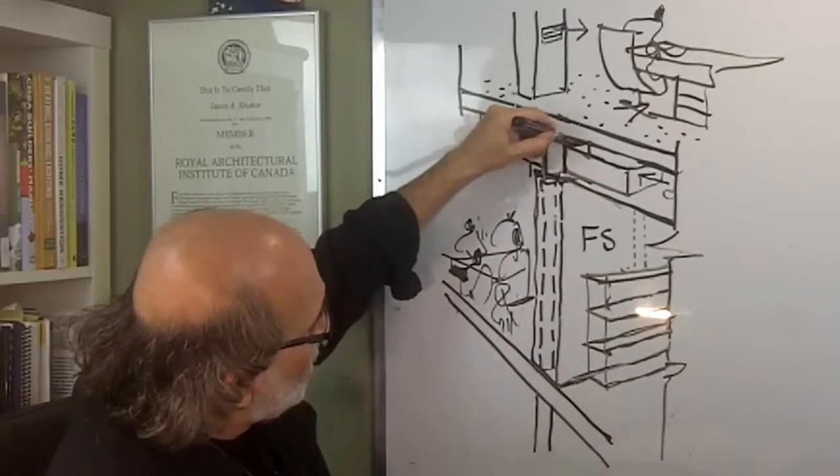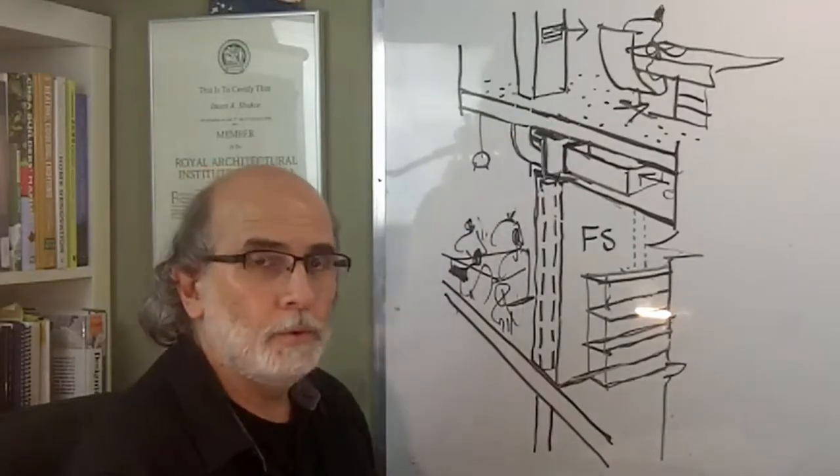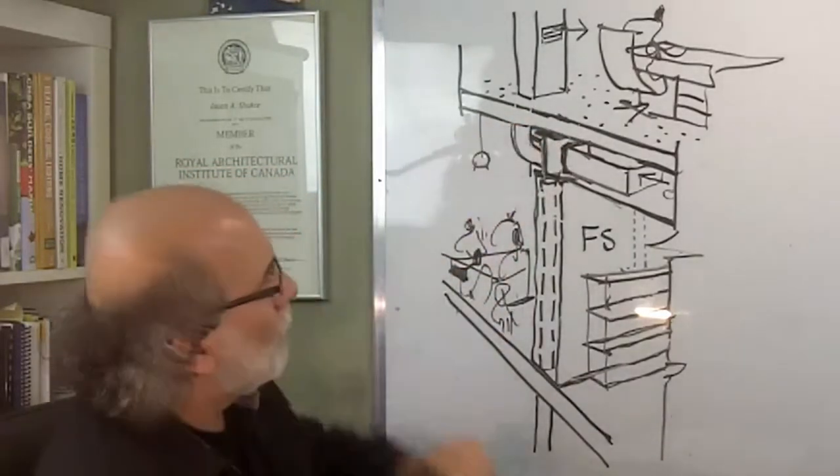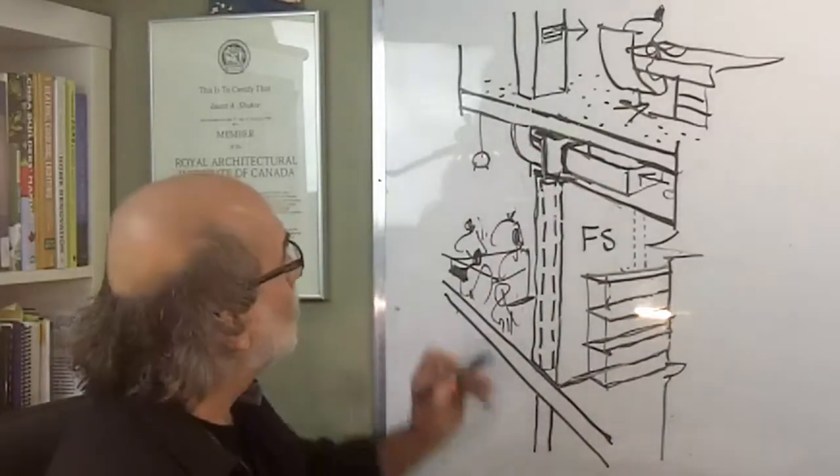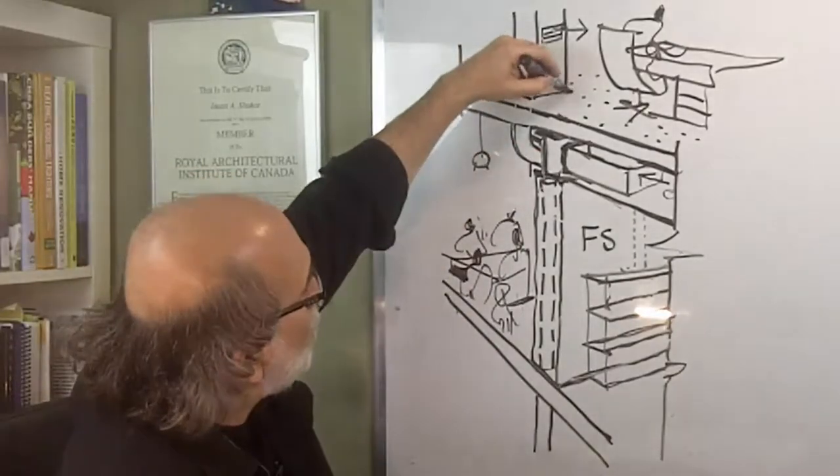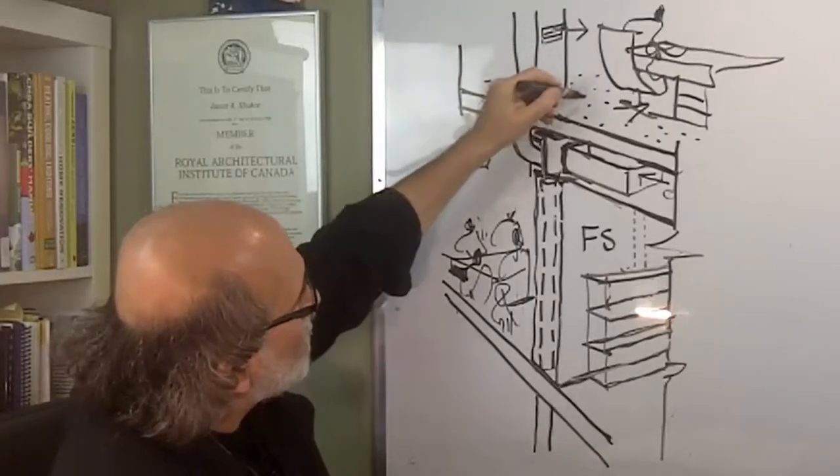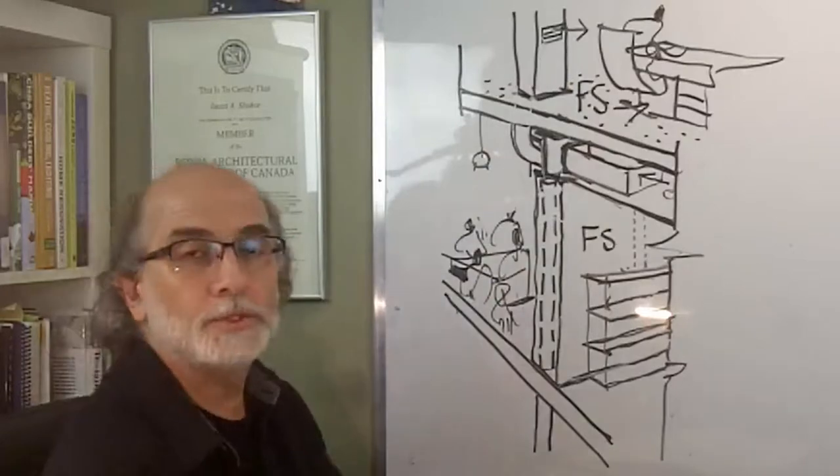And a closure in this case is a damper or a fire damper around the perimeter of the penetration. The same goes when you penetrate the upper fire separation, because this is also a fire separation.